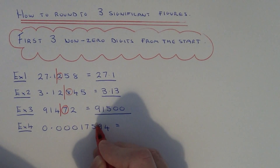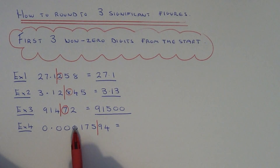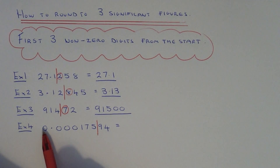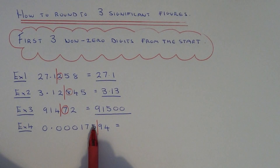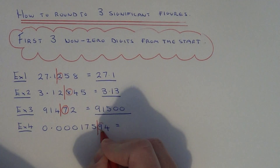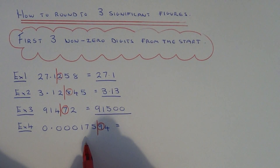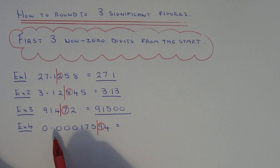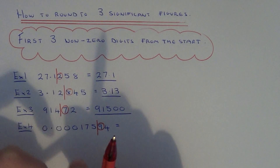So we count one, two, three. If we round our number down it will be 0.000175; if we round it up it will be 0.000176. We look at the number after the line — this number is five or above, so that means our number is closer to 0.000176.